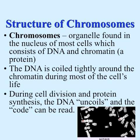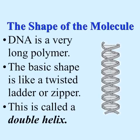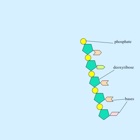DNA is a very long polymer — a very long molecule. Its basic shape is like a twisted ladder, a zipper, or a spiral staircase, called a double helix. The double helix has two strands twisted together — the two sides of the ladder. If you took a regular ladder and twisted it up like a spiral staircase, that would be the shape of DNA: two sides and rungs in the middle.